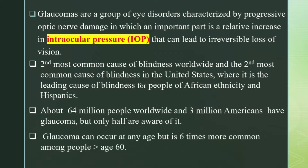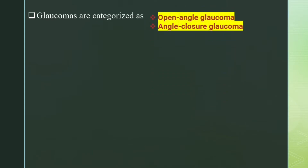Glaucoma can occur at any age, but it is six times more common among people over 60 years. Glaucoma can be categorized as follows: there is open-angle glaucoma and angle-closure glaucoma. We are going to talk about these two in separate videos.